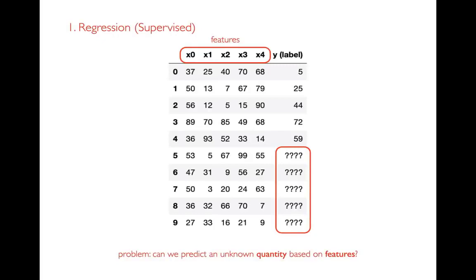To make this more concrete, here's a data frame. I have a Y column, which is my label — generally what I'm trying to predict — and feature columns X0 through X4, which in practice would have real names like number of beds in a house. I look for a relationship between the label and the features. Some rows have both, and other rows only have features but no Y label — for example, houses that haven't sold yet — and I want to predict what should go there.